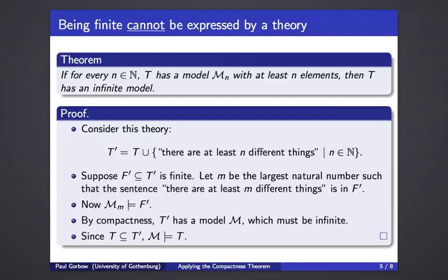So how do we prove this? The idea is that we extend this arbitrary theory T with the theory we used in the previous example, which expresses that there are infinitely many things. We obtain a theory T prime — think of it as T plus the expression that there are infinitely many things. We are going to show that T prime has a model. Because if T prime has a model, then that model must be infinite. But since T prime includes T, it must also be a model of T, and so we will have proved the theorem.